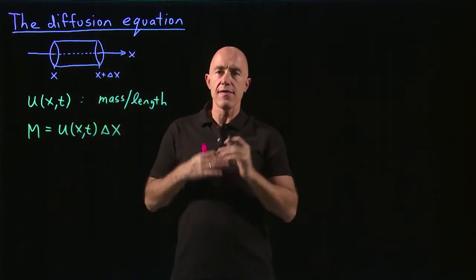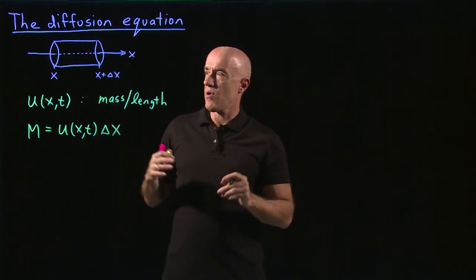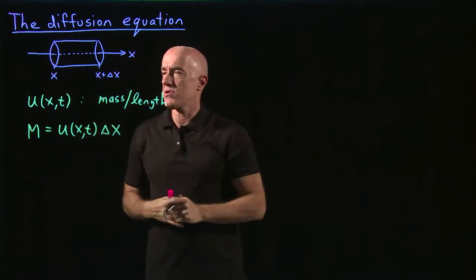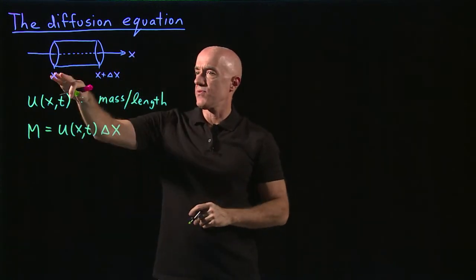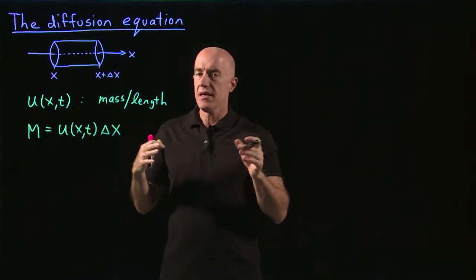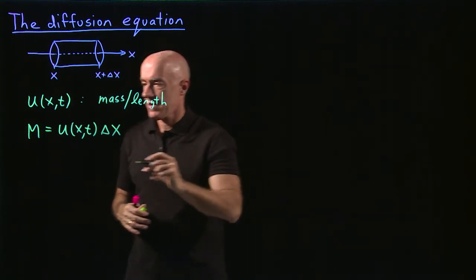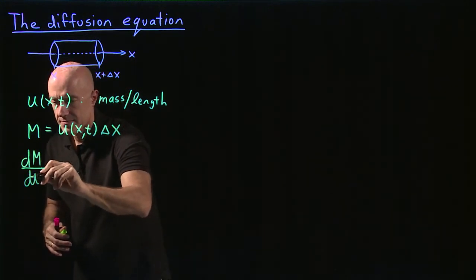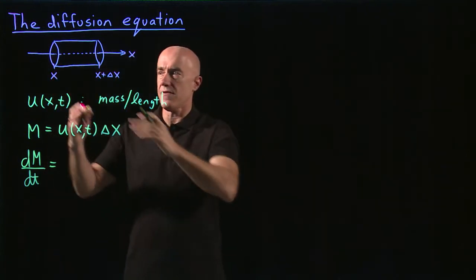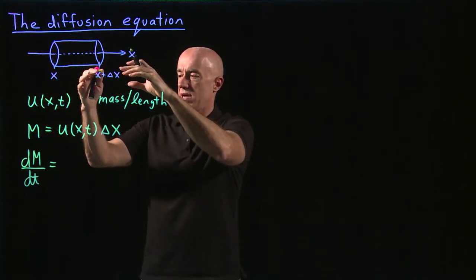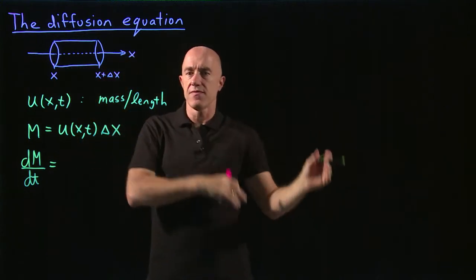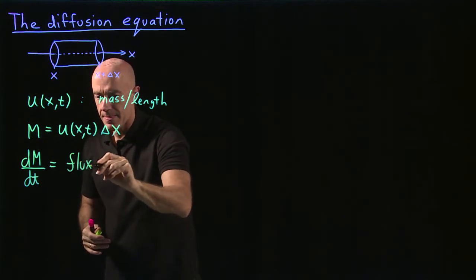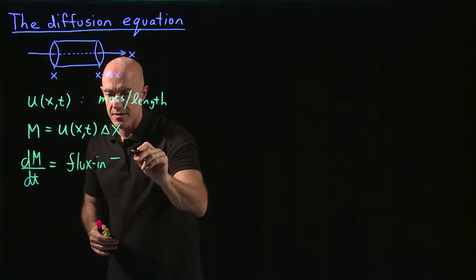Now to derive the diffusion equation, we want to know how the mass inside this small test volume between x and x plus delta x changes in time — so the time derivative of this mass. It's equal to the flux of mass going in minus the flux of mass going out. We can write that as flux in minus flux out.